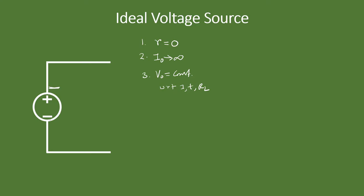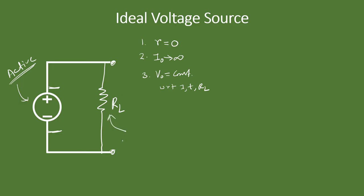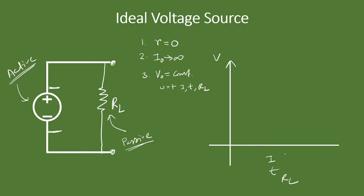The voltage at the two terminals is exactly equal to the source voltage even when a load resistance RL is connected. Any resistance can be a load resistance, but load resistance specifically refers to the resistance across which we are interested in energy dissipation. A voltage source is an active element — it doesn't dissipate energy — while load is a passive element which does. In the graph, the output voltage remains constant regardless of the x-axis variable.